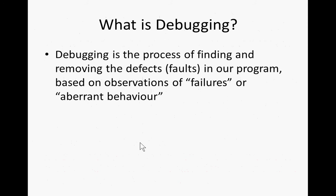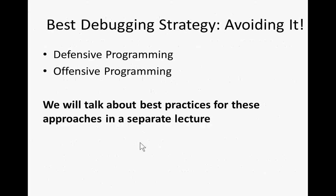So what is debugging? Debugging is the process of locating, identifying, and removing defects or faults from our programs based on observations of failures or aberrant behavior. The best debugging strategy is avoiding it, and there are good ways of doing this within modeling. Broadly they go under the designations of defensive programming and offensive programming, and we'll talk about best practices for these later today.